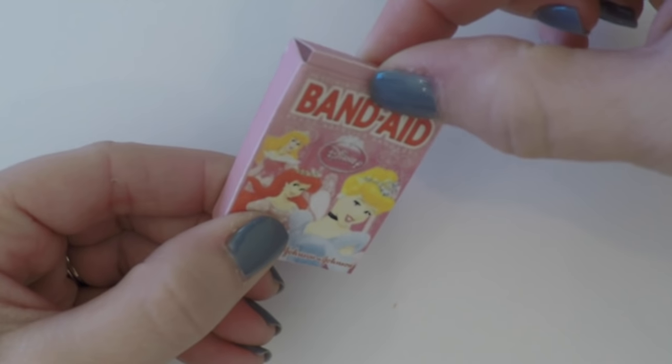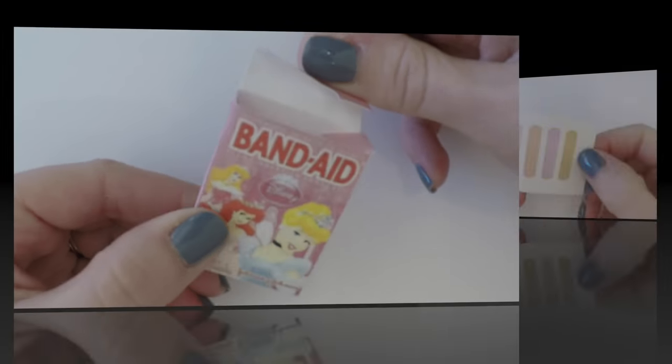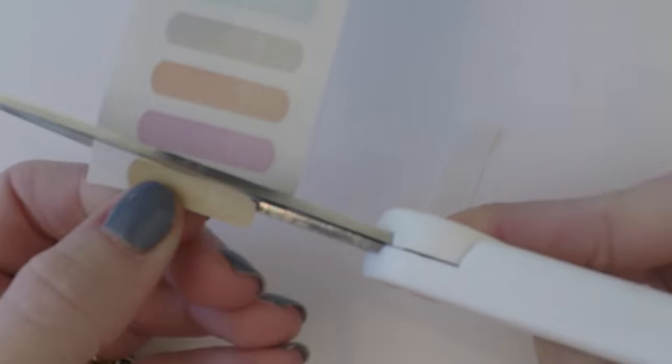Now take the band-aid printables and cut them out one by one. If you want real band-aids, you'll need to use sticker paper. Now cut out the band-aid sleeves and be sure not to cut off the right side of it.